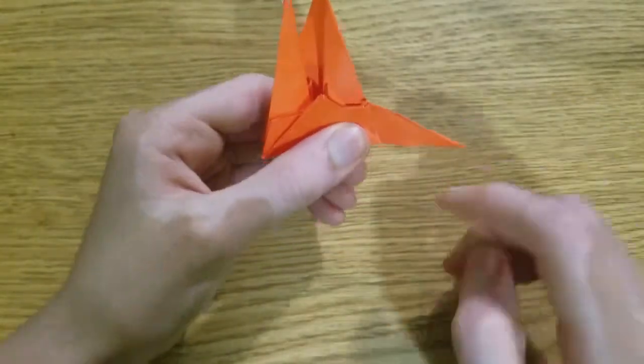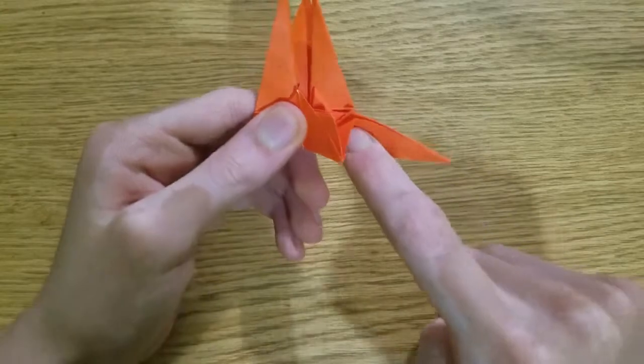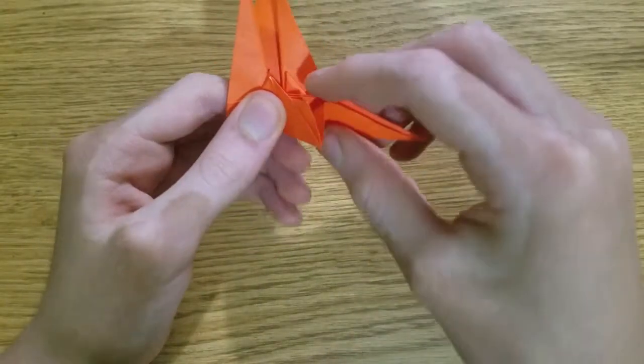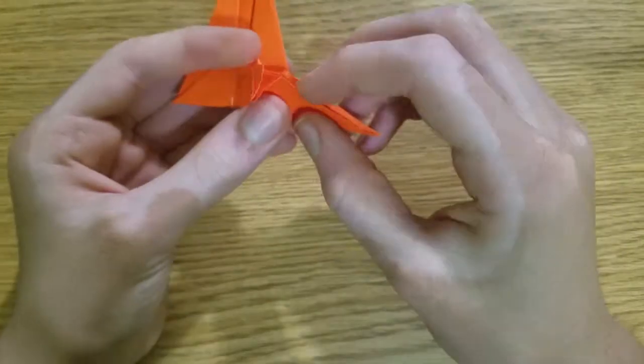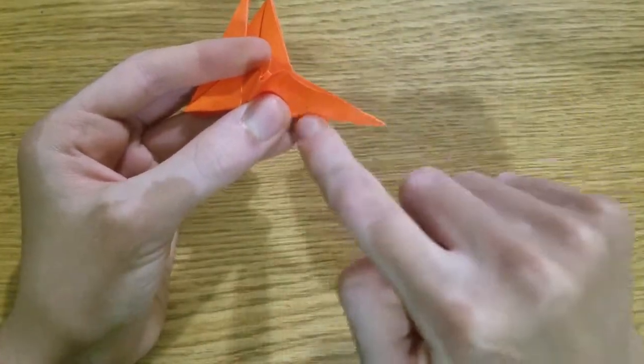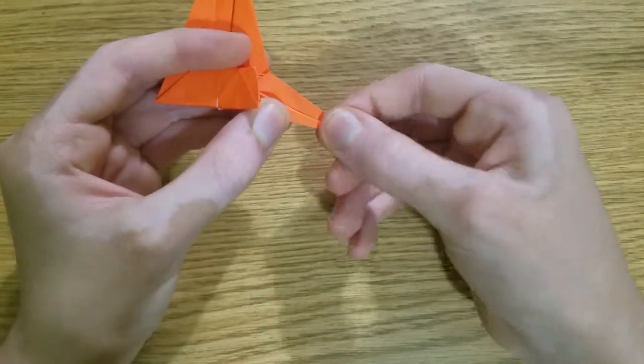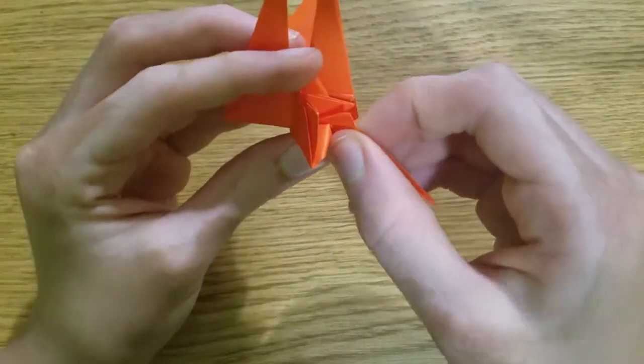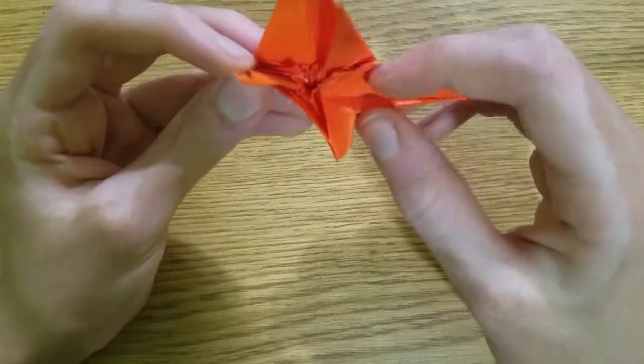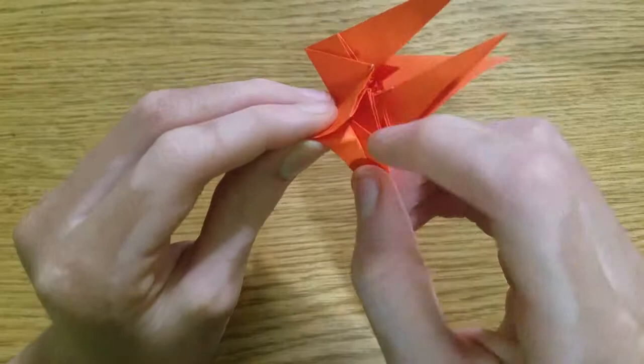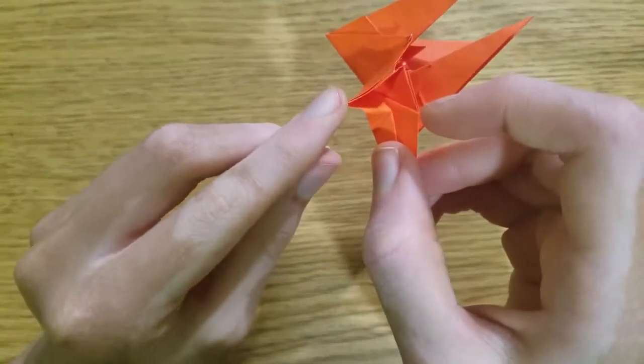Then what we do is we make another inside reverse fold, dividing this angle in half. Let's fold this edge to this edge first, like that. Go up until it meets this mountain fold here. And then we're going to make a crease from that intersection to this point.